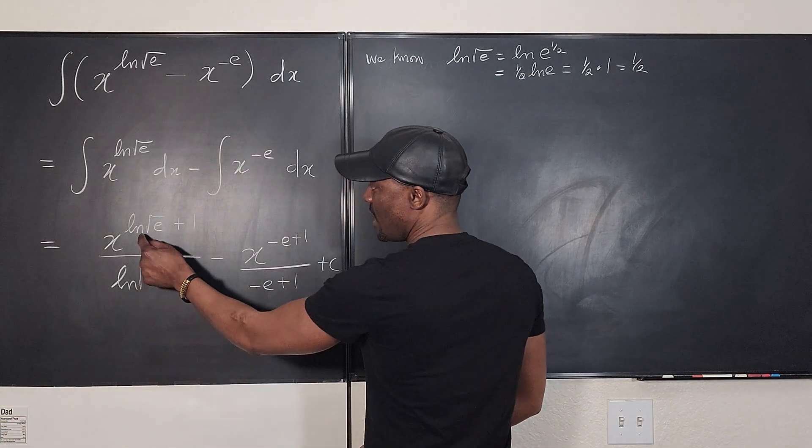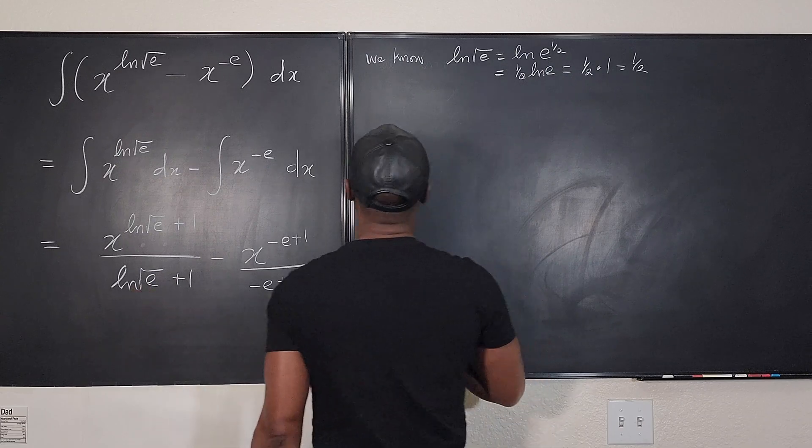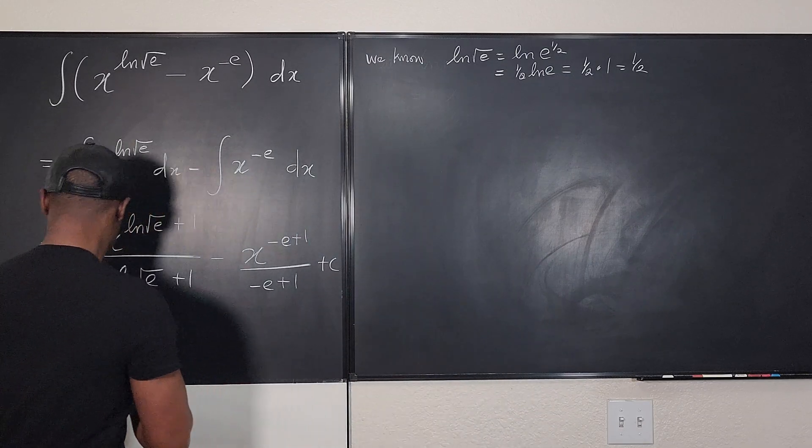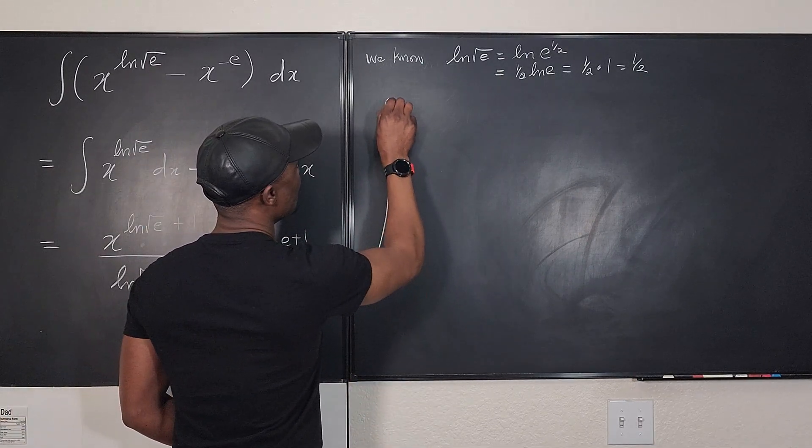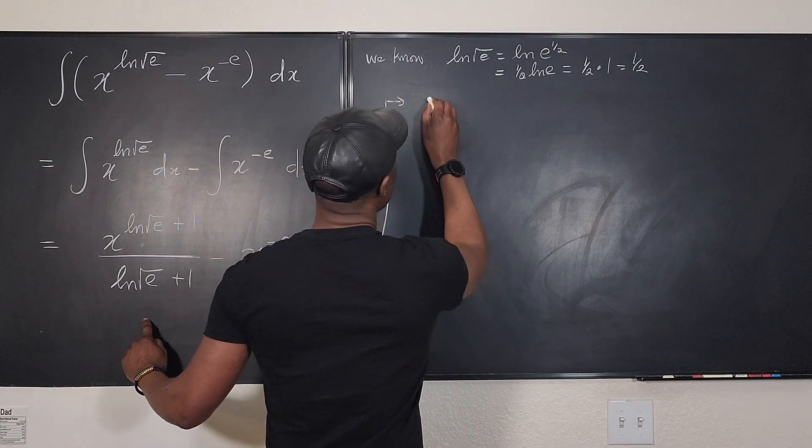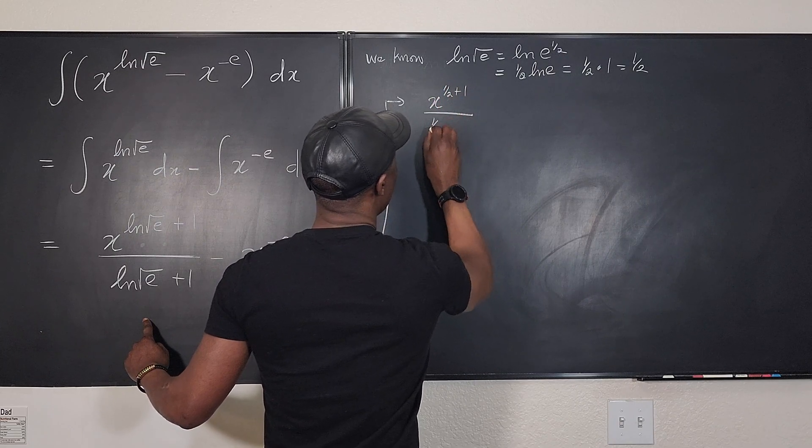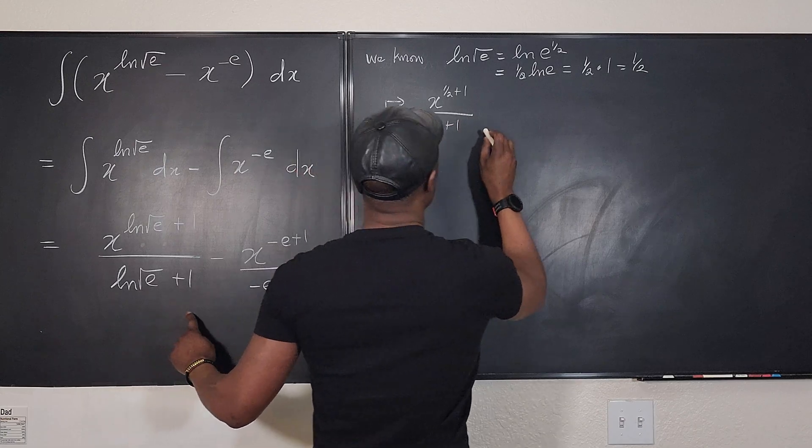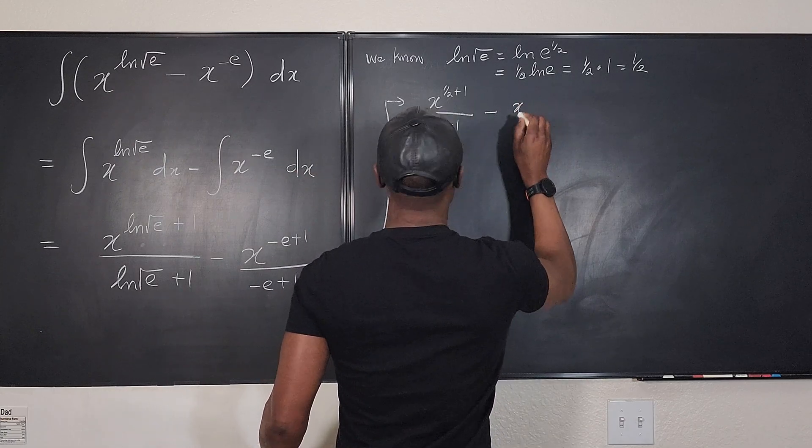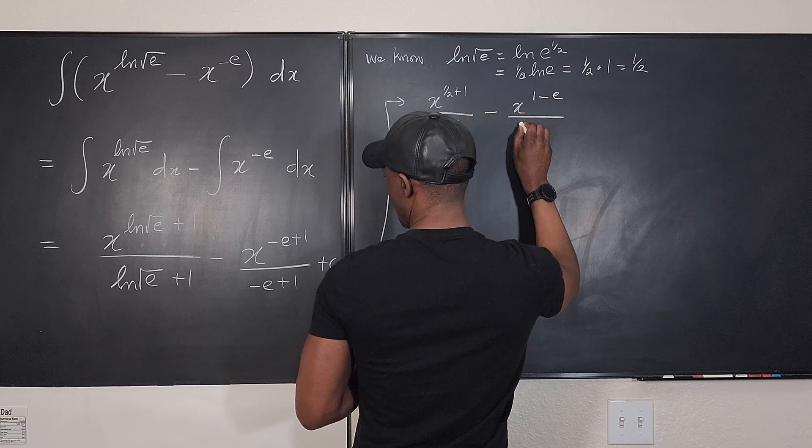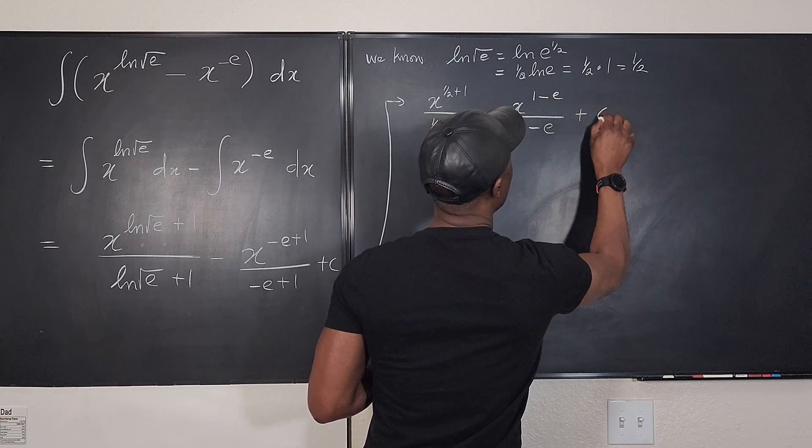Let's go back and plug in one half here, one half here. So this is equal to, let's equate this. This will be equal. Let's put it here. So this goes all the way here and it becomes X to the one half plus one over one half plus one minus X to the, I'm going to switch this. So that gives me one minus E over one minus E plus C.